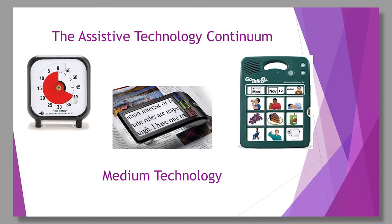Mid-tech items are typically things that need some form of battery or charging. The visual timer is a great universal design for learning tool — everybody benefits from having a timer showing how much time remains in a task. For someone with a visual impairment, an electronic magnifier allows the individual to zoom into specific words on a page without having to enlarge every single document at the photocopier. And there are mid-tech communication devices that are static but have multiple levels and one line that stays the same for the student.